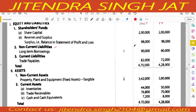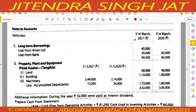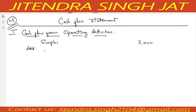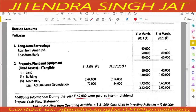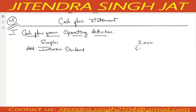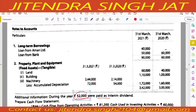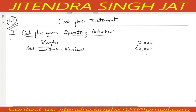There is one adjustment given: interim dividend appropriation of 52,000 was paid. So we add interim dividend of 52,000. No other points are given, so 52,000 plus 2,000 equals 54,000. This will be your net profit before tax.